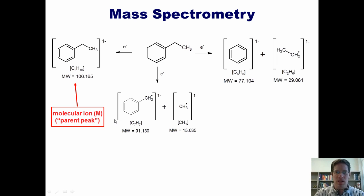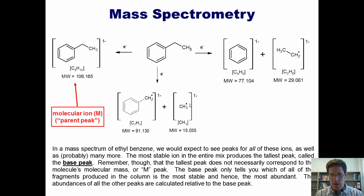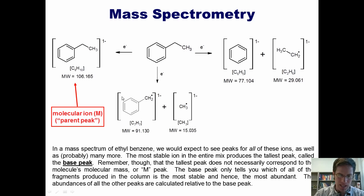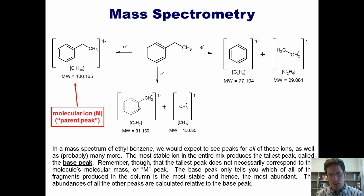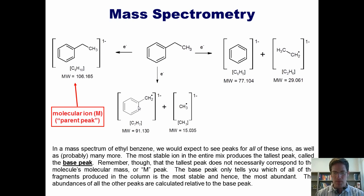It would be even more common to see our starting material get dissected into a benzyl radical fragment, which is the most stable because its electron can be delocalized by resonance into the benzene ring. This gives a mass peak at 91, while the methyl radical gives a peak at 15. In a mass spectrum of ethyl benzene, we'd expect peaks for all of these ions and more. The most stable fragment — the benzyl radical — would give the tallest peak, called the base peak. The tallest peak doesn't necessarily correspond to the molecular mass or M peak. The base peak only tells you which fragment is most stable and hence most abundant; all other peak abundances are calculated relative to the base peak.